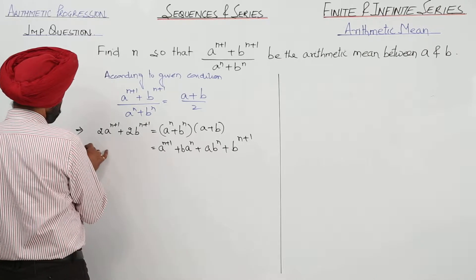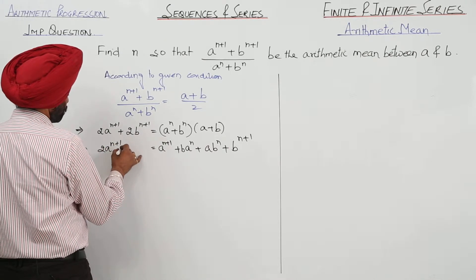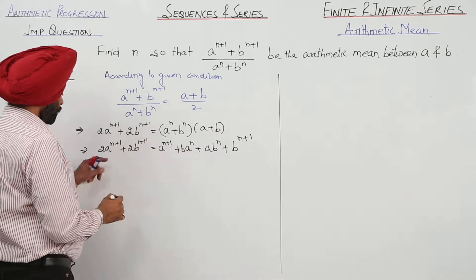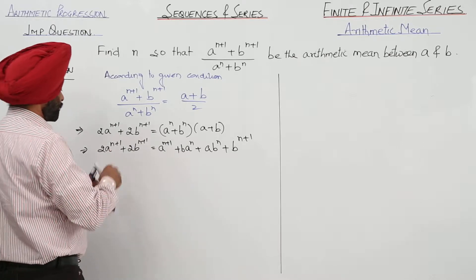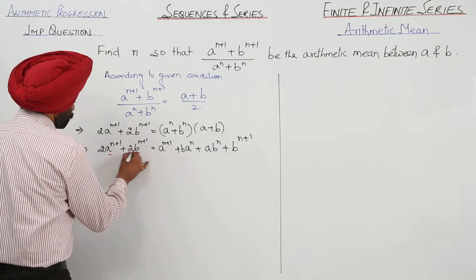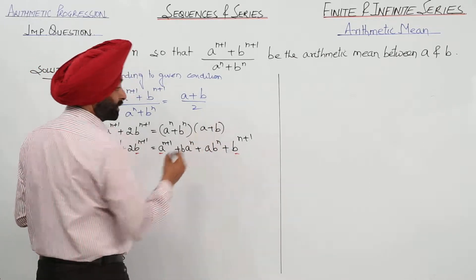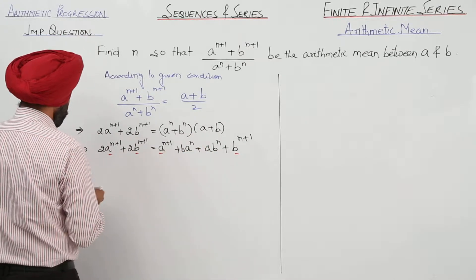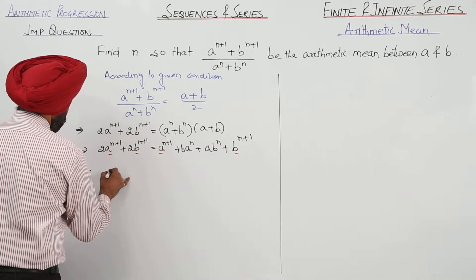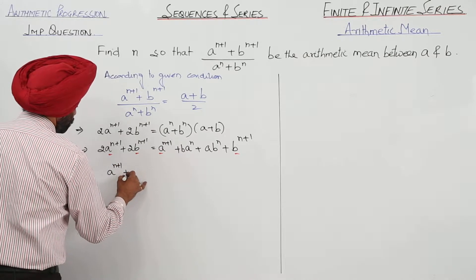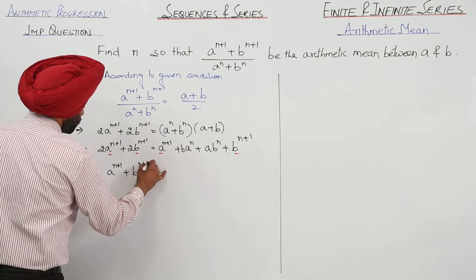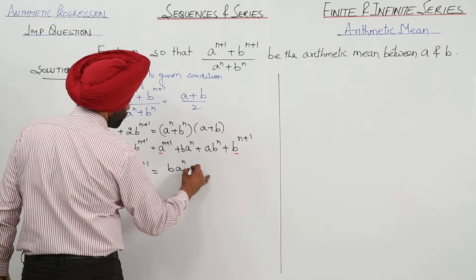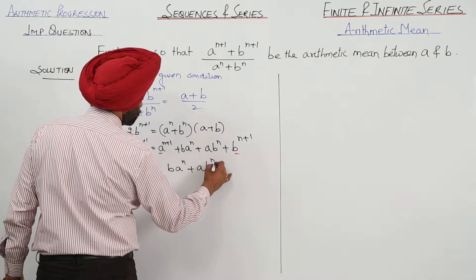Now, we have 2 times a raised to power n plus 1 plus 2 times b raised to power n plus 1 on the left. Checking the like terms, we identify matching terms on both sides. Taking the like terms to the left-hand side, we get: a raised to power n plus 1 plus b raised to power n plus 1 equals b times a raised to power n plus a times b raised to power n.